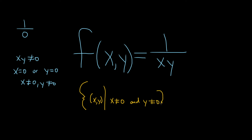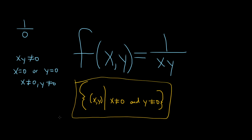Sometimes you can put a comma here instead of 'and' — if you put a comma, it's implied to be an 'and'. The important thing is that neither can be 0, because if one of them is 0, the whole thing is 0. So you cannot allow either of these to be 0. That would be the correct answer for the domain.